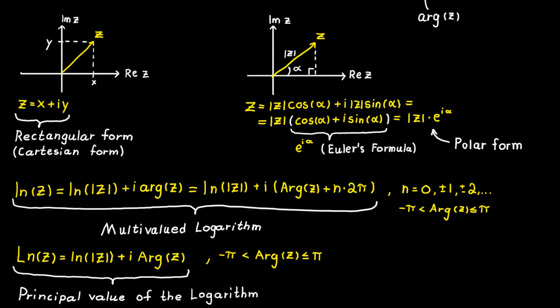And one important thing to remember about these two formulas is that they only work if the complex number is not equal to zero, since the natural logarithm is not defined for zero.